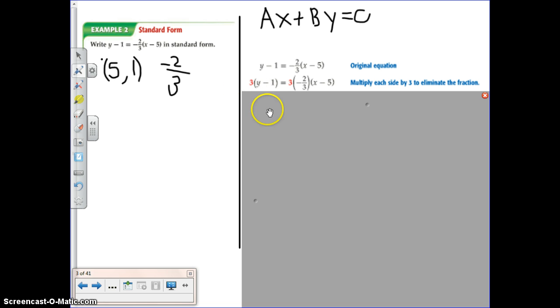I can do it to the other side, and these two sides of the equation will remain equal. So I'm going to multiply by 3 so I can get rid of this negative 2 thirds.